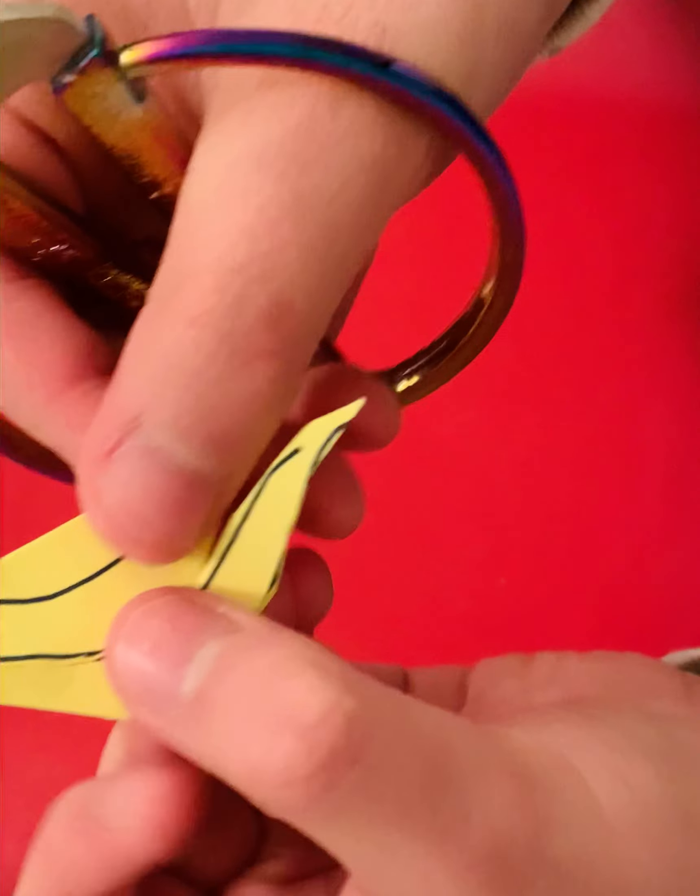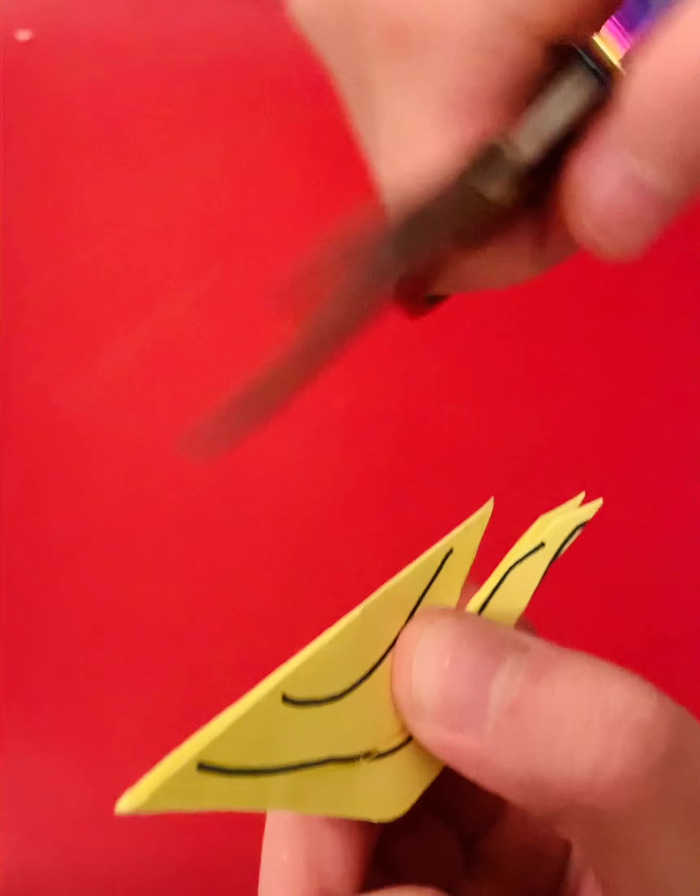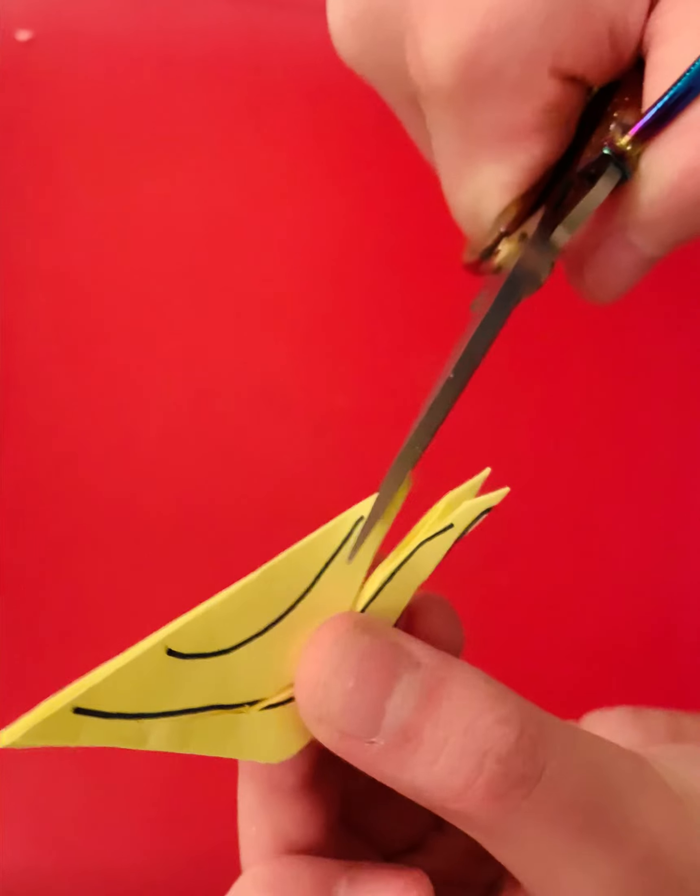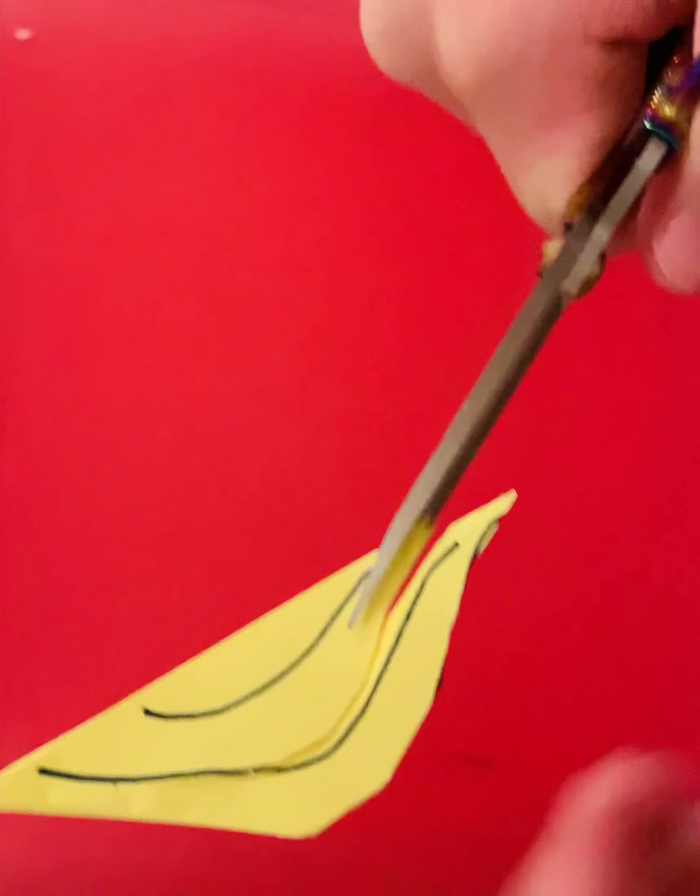So now what we're going to do is we're going to go right next to it. Let me line these two pieces of paper up. We're going to like this, line it up like so, and let's hope the camera focuses. There we go.